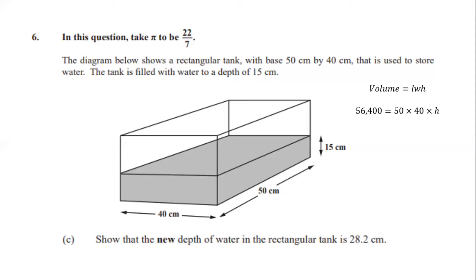50 times 40 gives 2,000. So 56,400 cm³ equals 2,000 cm² times height. Making height the subject: height equals 56,400 cm³ divided by 2,000 cm², which gives exactly 28.2 cm. This confirms the new depth of water in the rectangular tank is 28.2 cm.